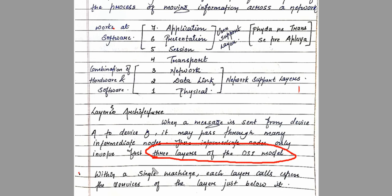Within a single machine, each layer calls upon the services of the layer just below it. For example, on the destination side, layer 3 (Network) uses the services of layer 2 (Data Link), and layer 3 provides services to layer 4 (Transport). Similarly, on the sender side, each layer uses the services of the layer below it and provides services to the layer above.